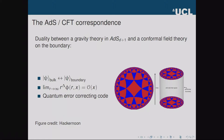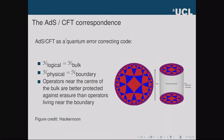Why should quantum information theorists be interested in this? It's been shown that the ADS/CFT correspondence acts like a quantum error correcting code. The bulk Hilbert space — where the quantum gravity theory lives — is the logical Hilbert space of the code, and the boundary Hilbert space — where the conformal field theory lives — is the physical Hilbert space. Information about the bulk physics is redundantly encoded in the boundary physics so that you can delete parts of the boundary system and still reconstruct all the bulk physics. Operators near the center of the bulk are better protected from erasures than operators living near the boundary.